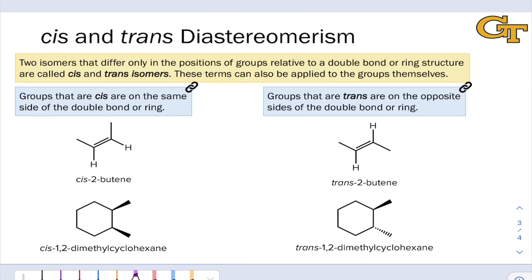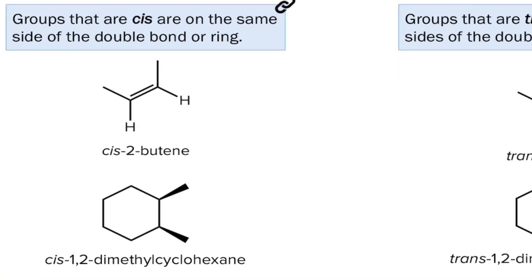Two isomers that differ only in the positions of groups relative to a double bond or ring are called cis and trans isomers, and we can apply those terms to the groups themselves or the isomers as a whole. On the left, for example, we see cis isomers in which two groups of interest are on the same side of a double bond or ring. In cis-2-butene, we have two methyl groups on the same side of the double bond. If we draw a line through the double bond dividing the alkene in half, both methyl groups are on the same side.